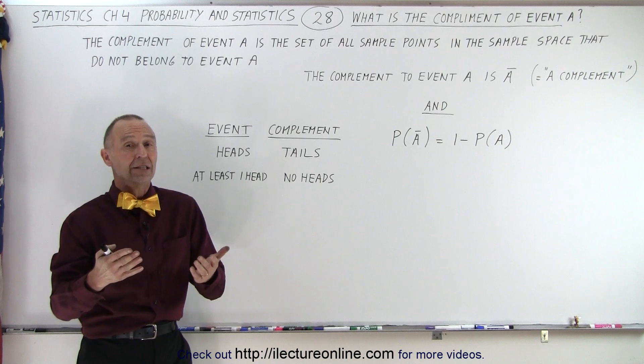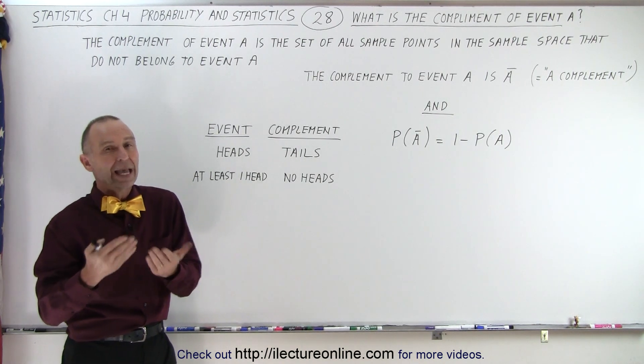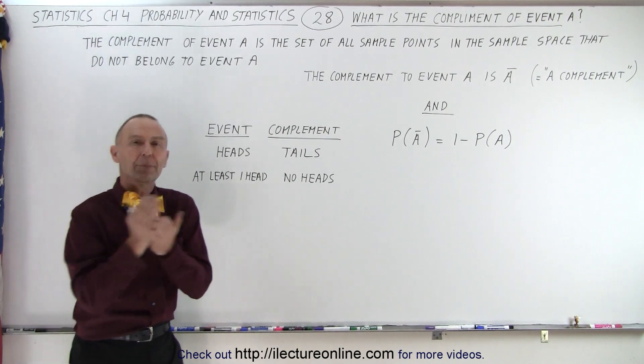So let's say we have event A. When we toss a coin, event A is the probability of throwing heads. What would then be the complement of that?